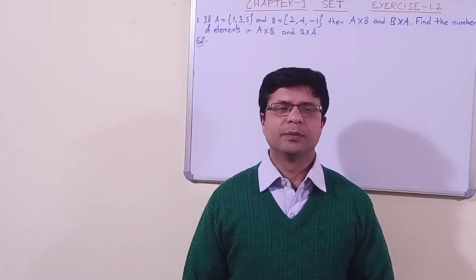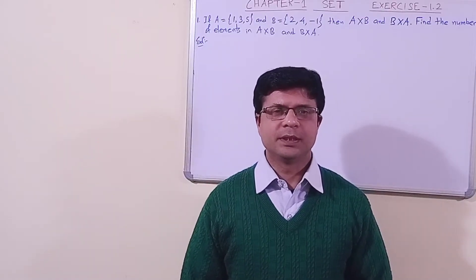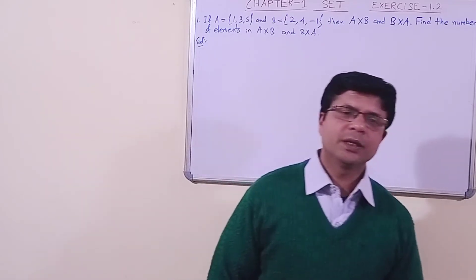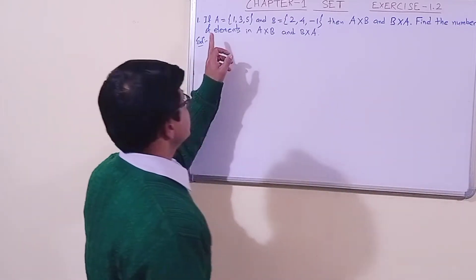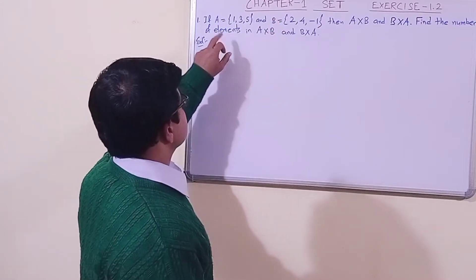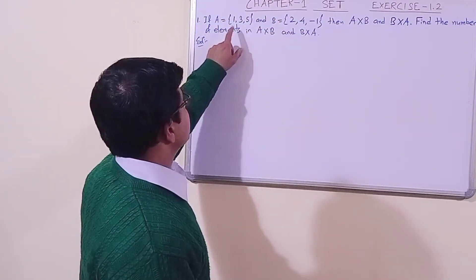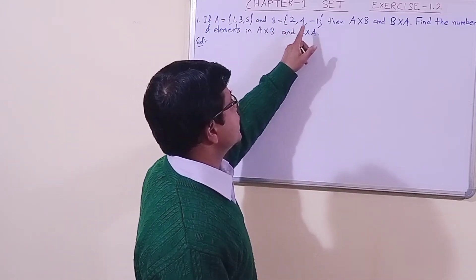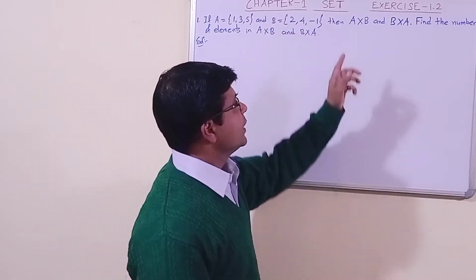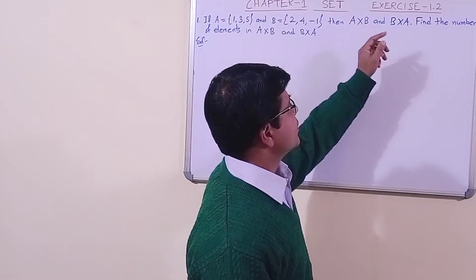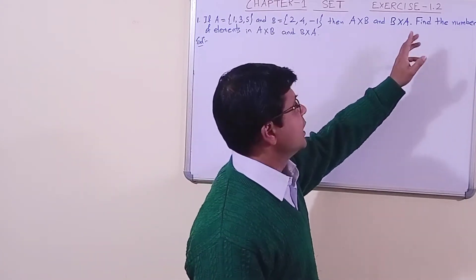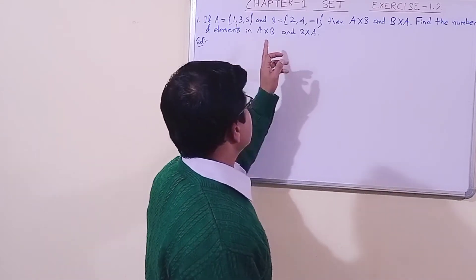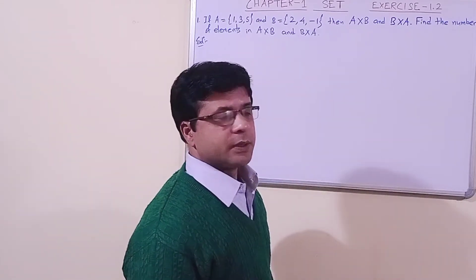Hello students, we are in chapter number one — the chapter is Sets. We have taken exercise 1.2. There are two sets, Set A and Set B. The elements of Set A are 1, 3, and 5, and the elements of Set B are 2, 4, and minus 1. We have to find: first, A cross B, then B cross A; and the second part is to find the number of elements in A cross B and B cross A.